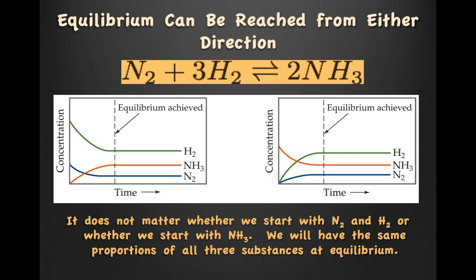It's important to note that equilibrium can be reached from either direction. In the first diagram on the left, notice you begin with a whole bunch of hydrogen, no ammonia, and a little bit of nitrogen — when you reach equilibrium, the concentrations become constant. In the second diagram, you begin with no hydrogen, no nitrogen, and only ammonia, but over time that will also establish equilibrium. It does not matter whether we start with nitrogen and hydrogen, or whether we start with ammonia — we will have the same proportions of all three substances at equilibrium.